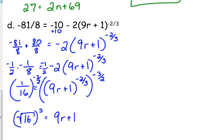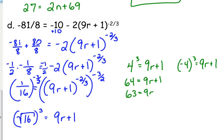We have positive 4 cubed equals 9r plus 1, and we also have negative 4 cubed equals 9r plus 1. 4 cubed is 64, so that's 63 equals 9r, so 7 is one of our solutions. Negative 64 equals 9r plus 1, so that says negative 65 equals 9r, which gives negative 65 over 9.